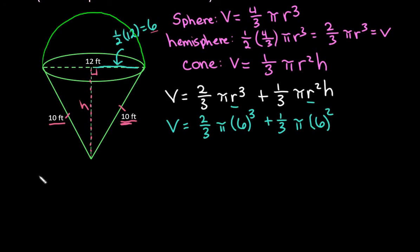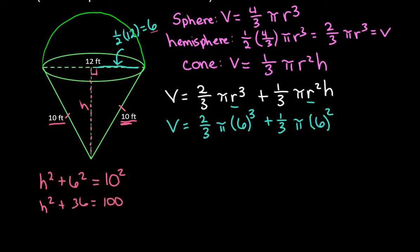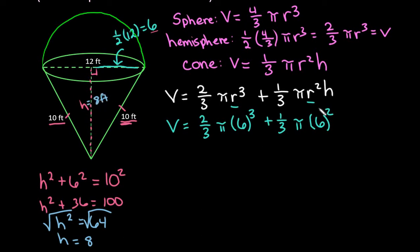We'll use the Pythagorean theorem: a squared plus b squared equals c squared. So height squared plus 6 squared equals 10 squared, which gives us height squared plus 36 equals 100. Subtracting 36, we get height squared equals 64, and taking the square root gives us a height of 8 feet. That's what we plug in for h in the cone formula.